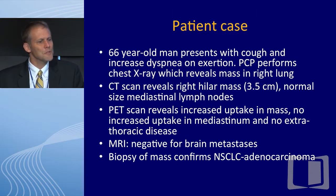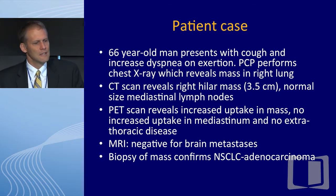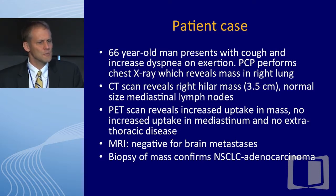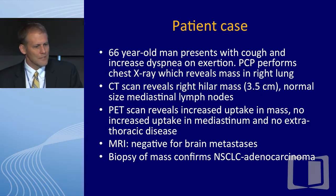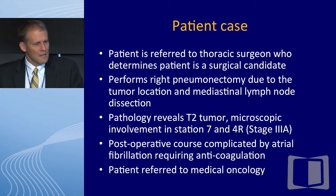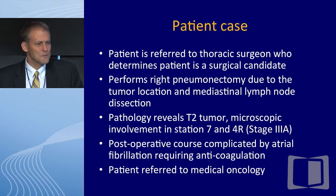This is a more typical case. A 66-year-old man presents with cough and dyspnea. CT scan reveals a normal-size right hilar mass and normal-size lymph nodes. A PET scan shows no extra-thoracic disease, no mediastinal disease. MRI is negative for brain metastasis, and biopsy shows adenocarcinoma. The patient is referred to a thoracic surgeon who does an operation.